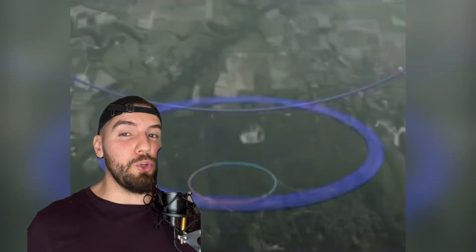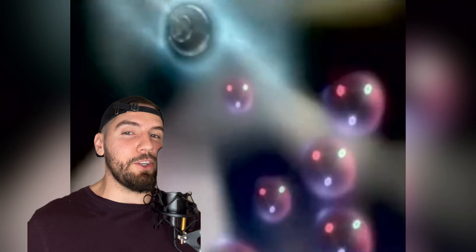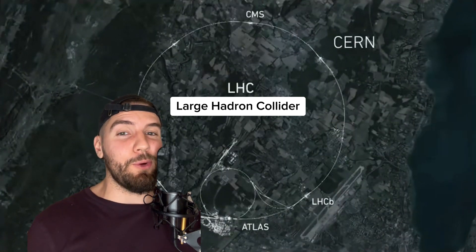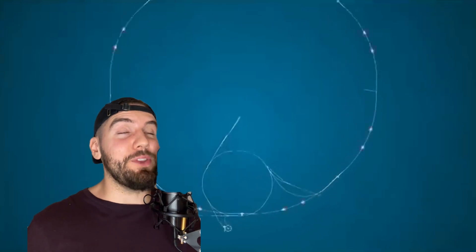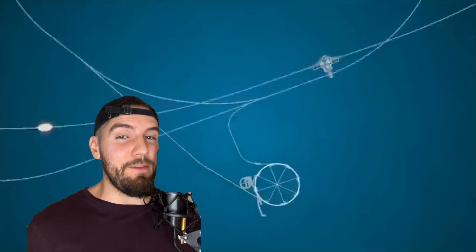They're then fed into the final loop, where the two sets of protons are accelerated in opposite directions so they could collide into each other and do science. This right here would be the Large Hadron Collider, the biggest particle accelerator in the world at 27 kilometers in circumference, where the protons travel the entire circular distance more than 11,000 times per second. So yeah, it's fast.